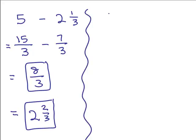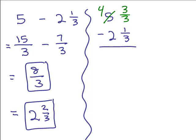A second way is the borrowing technique for 5 minus 2 and 1 third. The problem is you can't take 1 third away from nothing, so borrow — 5 is the same as 4 plus 1. Write that 1 as a fraction with denominator 3, which is 3 over 3. Now do 4 minus 2 which is 2, and 3 thirds minus 1 third which is 2 thirds, giving 2 and 2 thirds — the same answer.